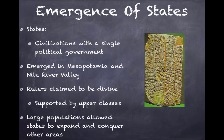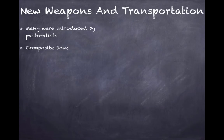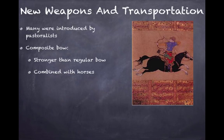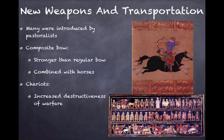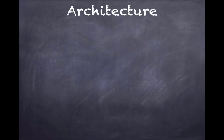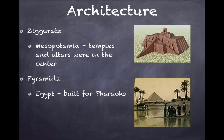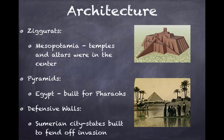Large populations allowed states to expand and conquer other areas. New weapons introduced largely by pastoralists included the composite bow — a stronger, smaller bow that combined with horses allowed military dominance — and chariots, which increased the destructiveness of warfare. Iron weapons were much stronger than previous weapons; those who possessed these along with horses could dominate others. In architecture, ziggurats in Mesopotamia featured temples and altars showing religious significance. Pyramids in Egypt served as tombs for the afterlife, and defensive walls were built by city-states to fend off invasion.